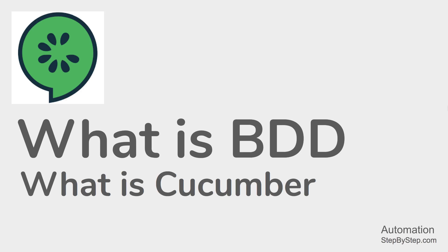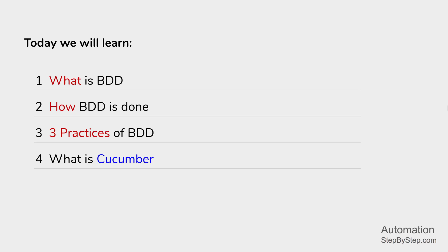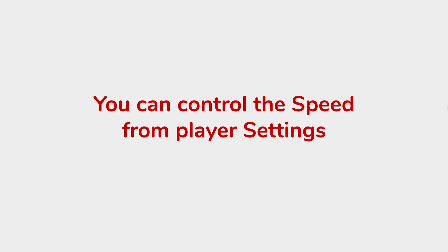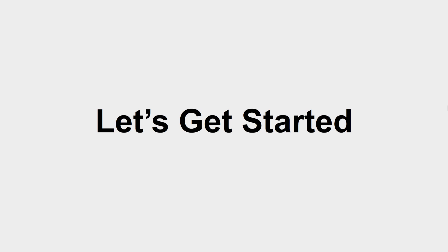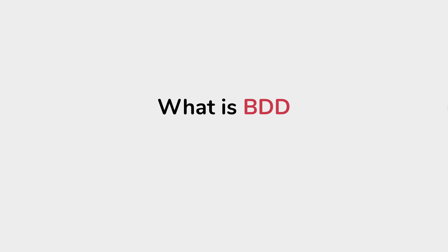Hello and welcome to this session. In this session, we are going to go very basic step by step from scratch and we are going to learn what is BDD, how does a BDD process start in an organization. We will look at three practices of BDD and we will see what is Cucumber and how does Cucumber fit into the BDD process. You can always control the video speed from the player settings.